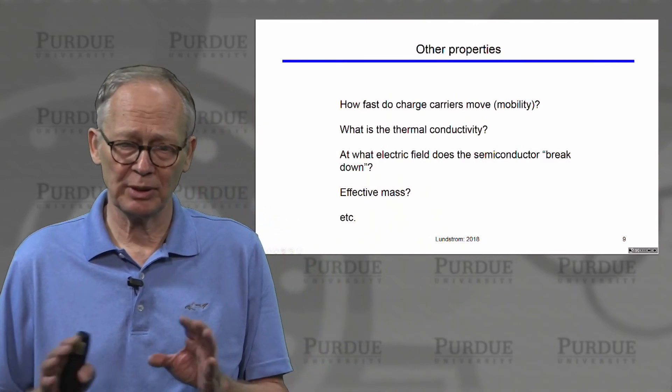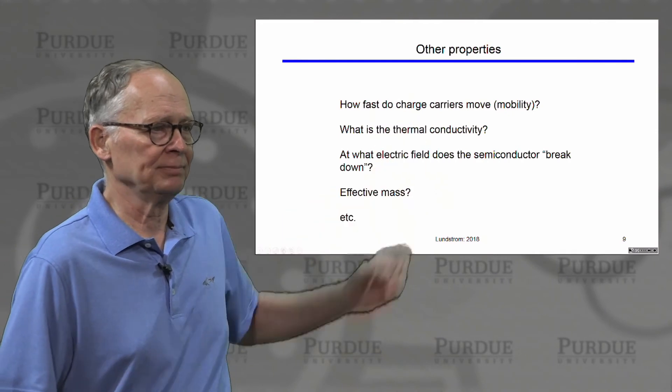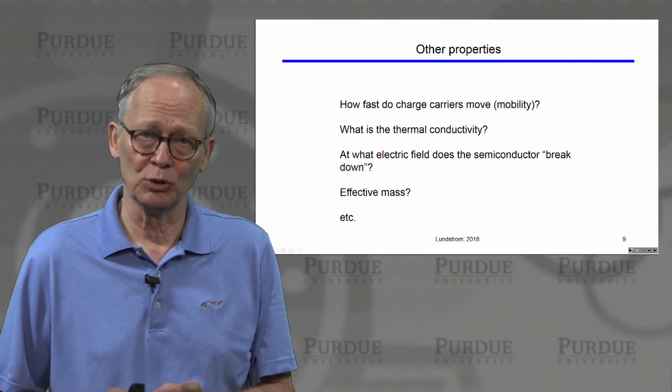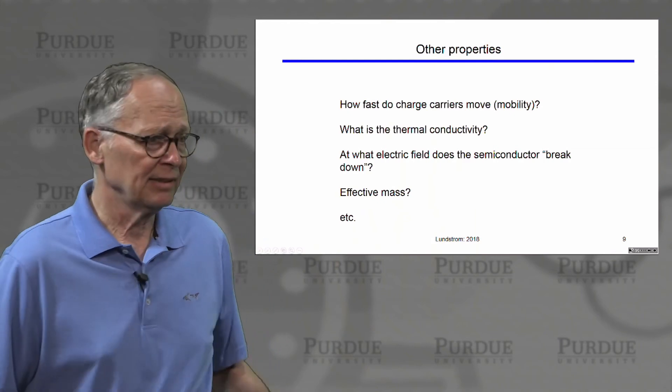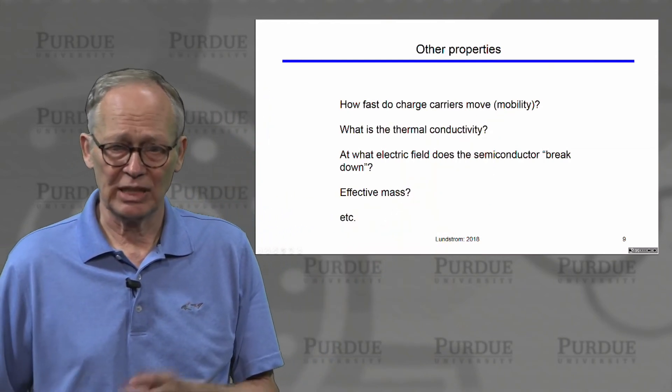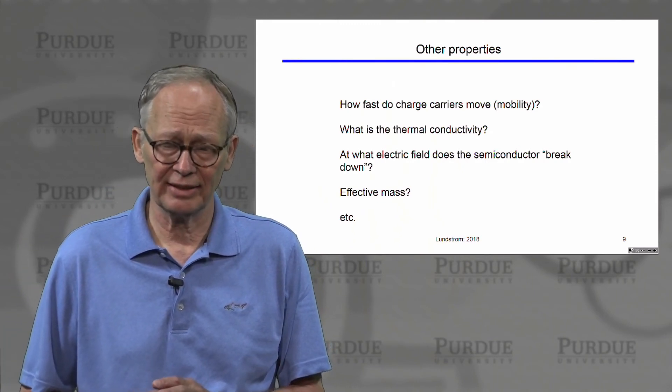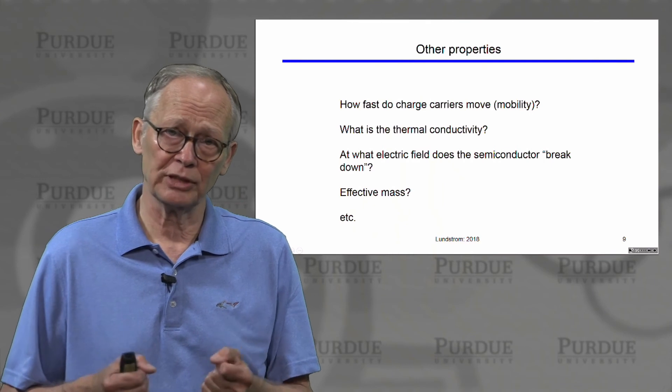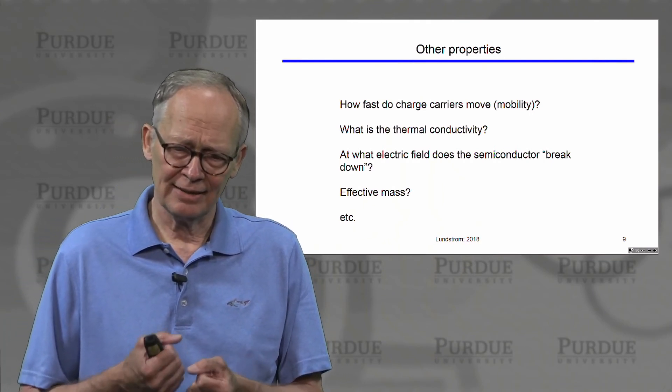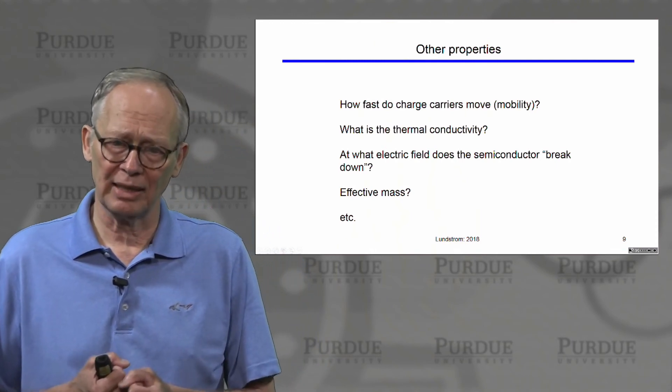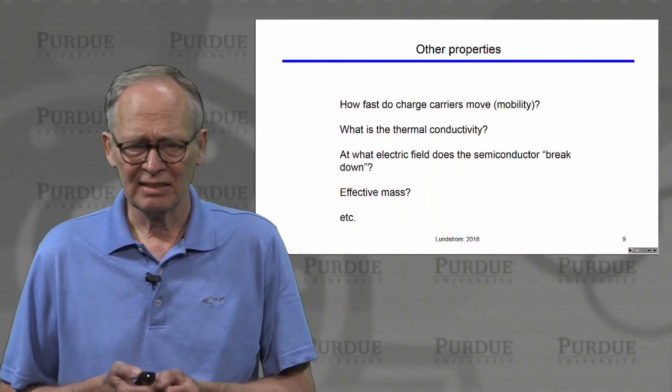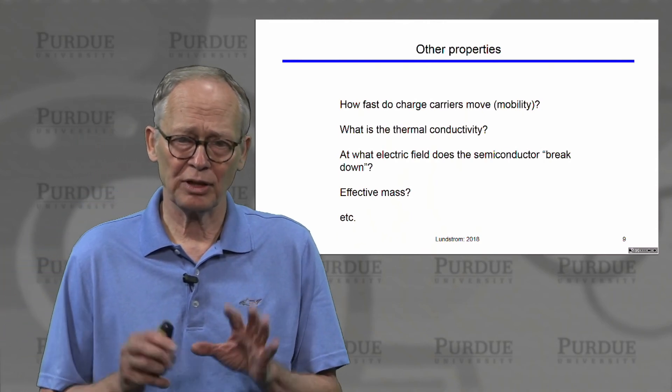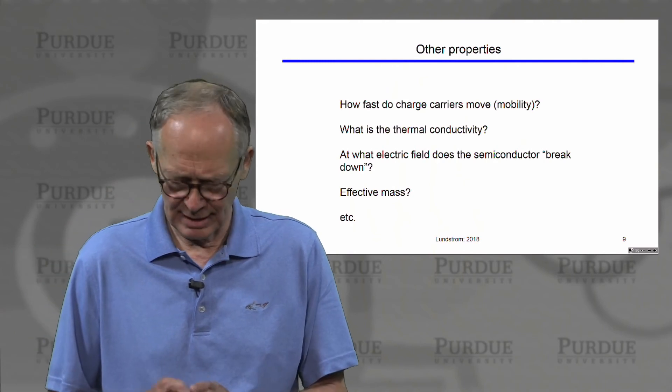Now there are other important properties. We've just mentioned a few of them here. We'll talk later about how fast can these charge carriers, these electrons in the conduction band or the holes in the valence band, how fast do they move in semiconductors, the faster they move, the more current they can carry. There's a parameter called mobility that defines that. It's important frequently to know what the thermal conductivity is because we don't want our silicon lattice or semiconductor lattice to heat up too much. It's possible if we apply large voltages to semiconductors to have electric fields that are so strong that the field can rip electrons out of the covalent bonds. When that happens, the semiconductor breaks down. There's another concept called effective mass that we'll discuss in the next lecture. So there are a variety of other properties, but we've mentioned here in this lecture some of the most important ones.